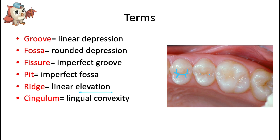A ridge is basically the opposite of a groove — a linear elevation of enamel on a tooth crown — and they also come in different shapes and sizes. Marginal ridges are elevated areas that form the mesial and distal borders of teeth. Triangular ridges descend from a cusp tip and widen as they run down toward the middle of an occlusal surface. The cingulum is a convex protuberance on the lingual surface of anterior teeth right next to the gingiva — a U-shaped ridge we'll look at closely when discussing the maxillary central incisor.